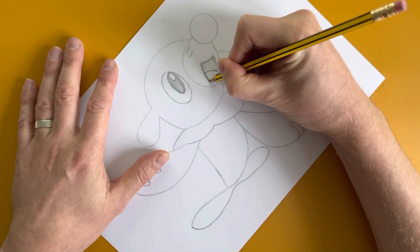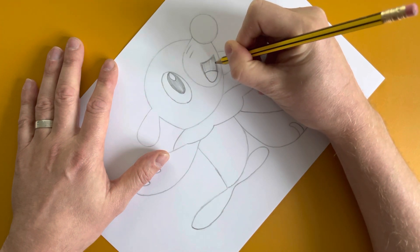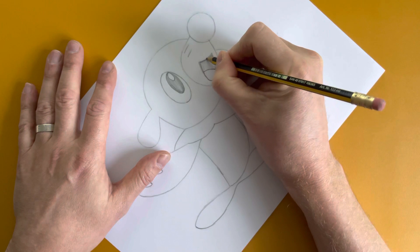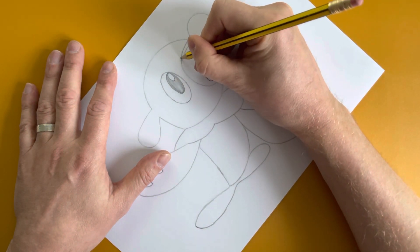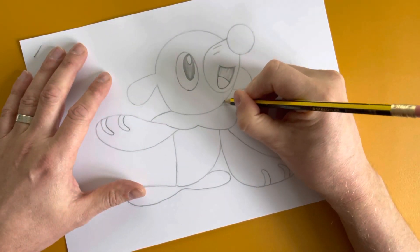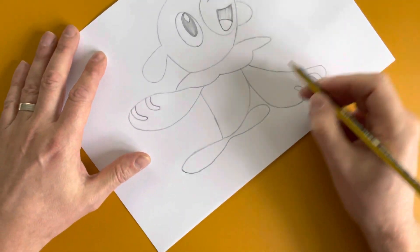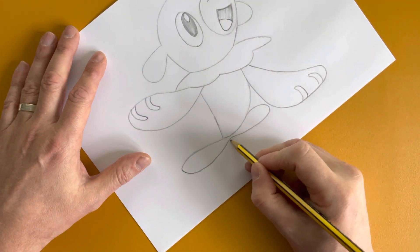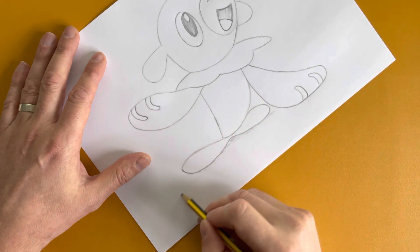And just add a thicker line where we think we need to. I think we're pretty much there now - nice quick drawing today. Just a little bit of shading at the bottom just so you can show him sitting on the floor.